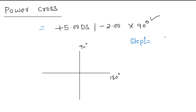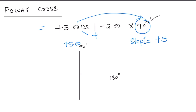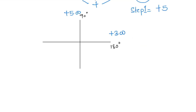In the case of the power cross, write the sphere power as it is, but it will be written towards the axis of the cylindrical power given in the sphero-cylinder form. So we write plus 5 towards the 90-degree meridian. To find the second meridian, we add the spherical and cylindrical powers together, giving us plus 3, and this is written towards 180 degrees — the opposite to the cylindrical axis in the sphero-cylinder form.